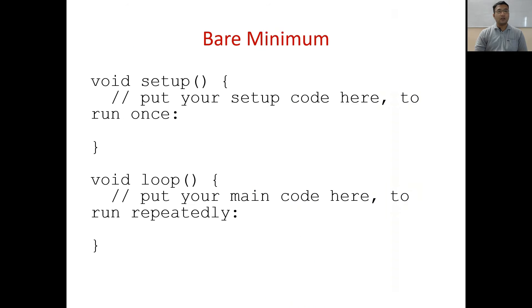This was the bare minimum code we had seen. We also discussed in last session that void setup and void loop are the two main bodies where the program for Arduino is written. The code that is needed to be executed only once is to be written in setup, and the code that is needed to be written repeatedly is to be written in void loop.